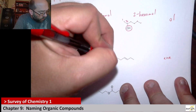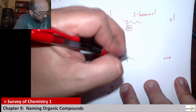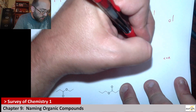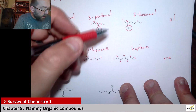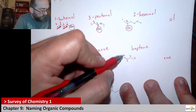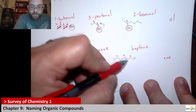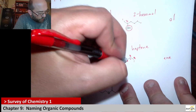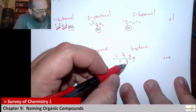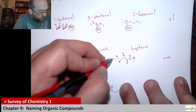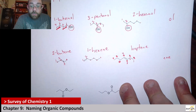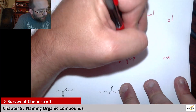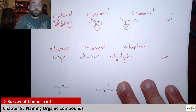Here we get one, two, three, four, five, six, seven — so this is a heptene. The numbering from one direction gives a four at the double bond, but if we number the other direction, one, two, three, the first carbon that sees it is three. So this would actually be the end we'd want to start numbering from. This would be called 3-heptene.